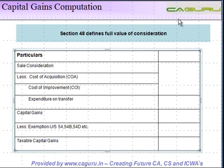In capital gains tax computation, just like in profits and gains of business and profession where you have income and various expenses, similarly in capital gains you have your receipts which are the sale proceeds and then you have your cost — so instead of expenses you have cost.